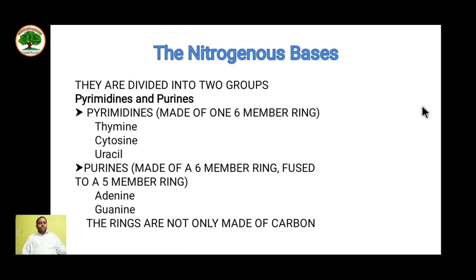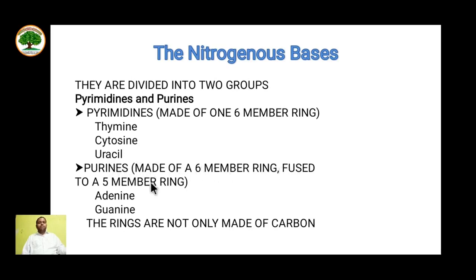Let's see the nitrogenous bases. There are five nitrogenous bases divided into two groups: pyrimidines and purines. Pyrimidines form a six-membered ring and include thymine, cytosine, and uracil. Purines are made up of a six-membered ring fused to a five-membered ring, namely adenine and guanine.